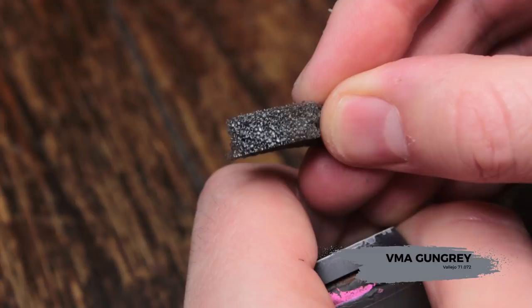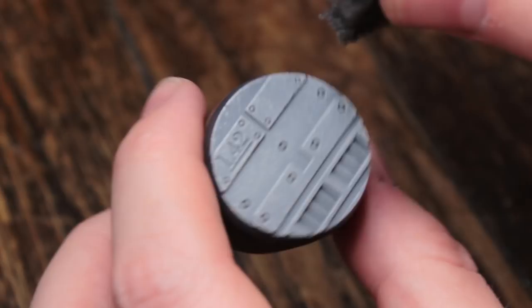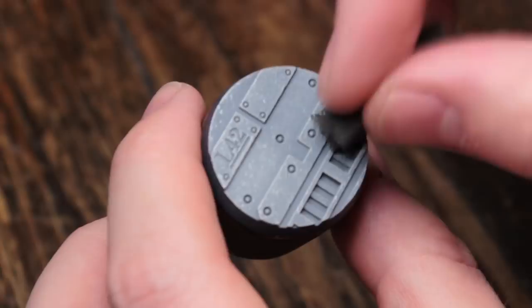Now we're going to sponge on some VMA Gun Grey to create areas where the protective paint has chipped off, revealing the bare metal underneath. Now how this looks depends upon the angle that your light's hitting it. From some angles, it's going to look darker than others.